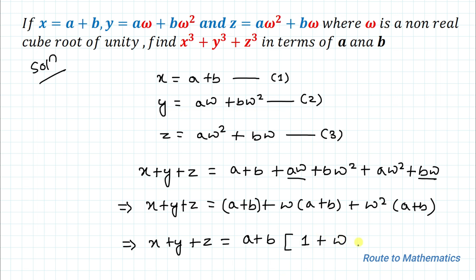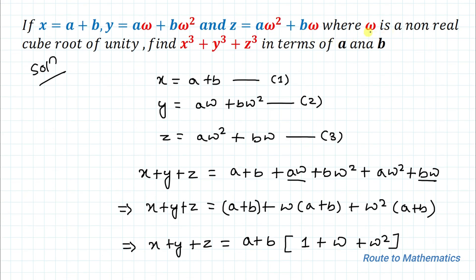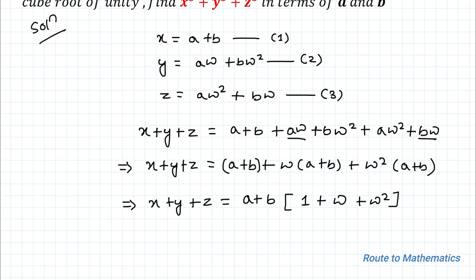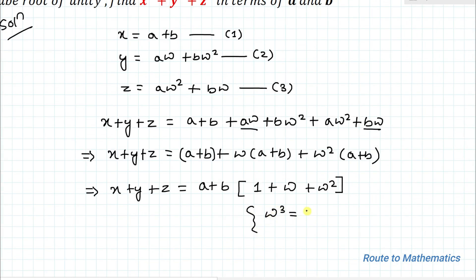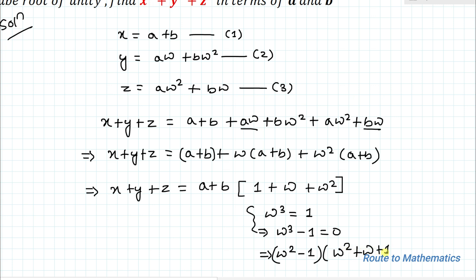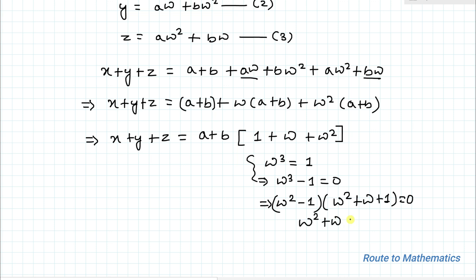So we have 1 plus omega plus omega squared. Now, the statement that omega is a non-real cube root of unity means that omega cubed equals 1. This implies omega cubed minus 1 equals 0. Applying the algebraic identity for a cubed minus b cubed, we get (omega minus 1)(omega squared plus omega plus 1) equals 0. This means omega squared plus omega plus 1 equals 0.